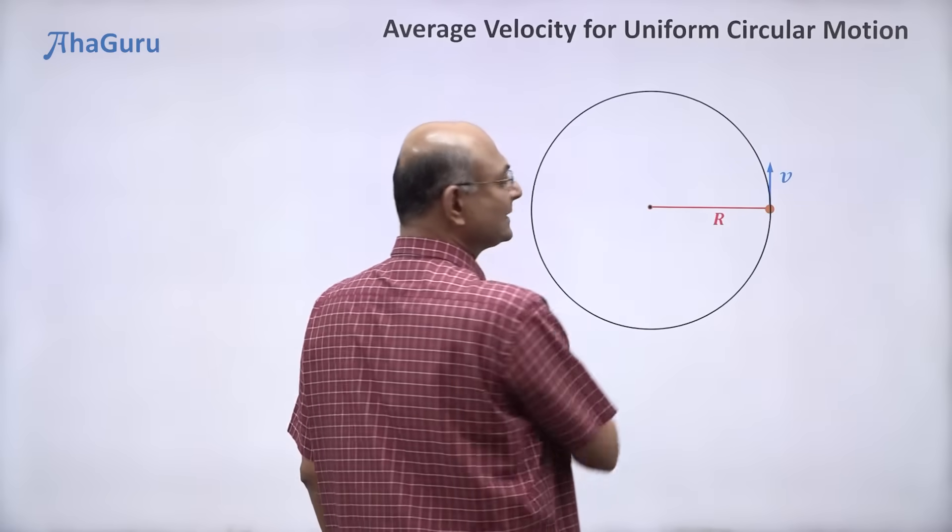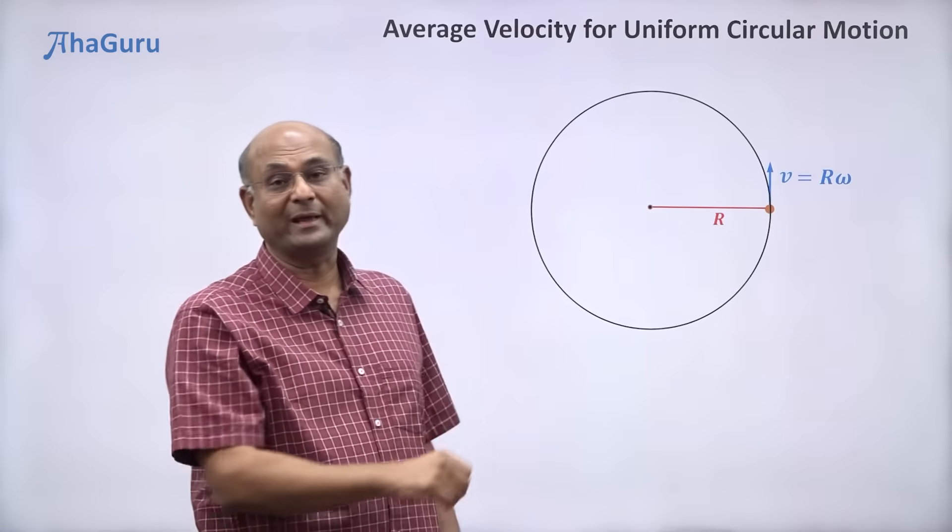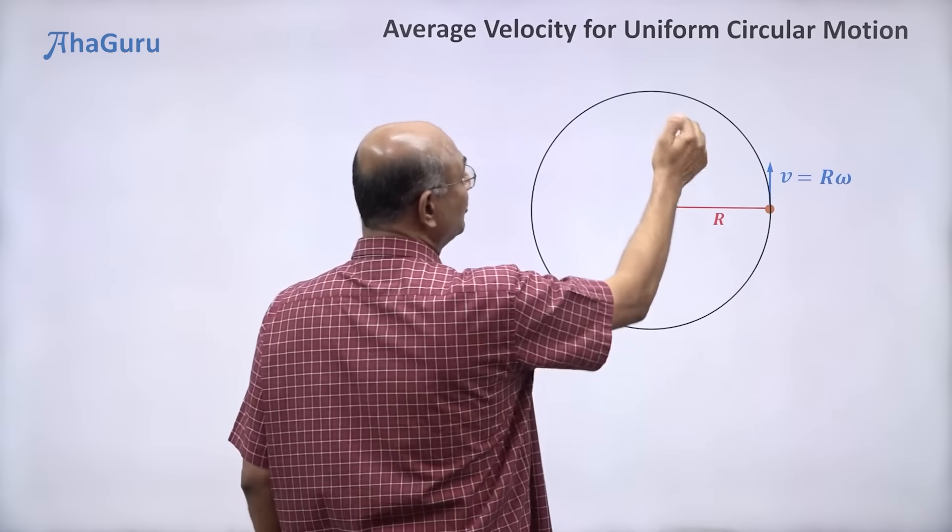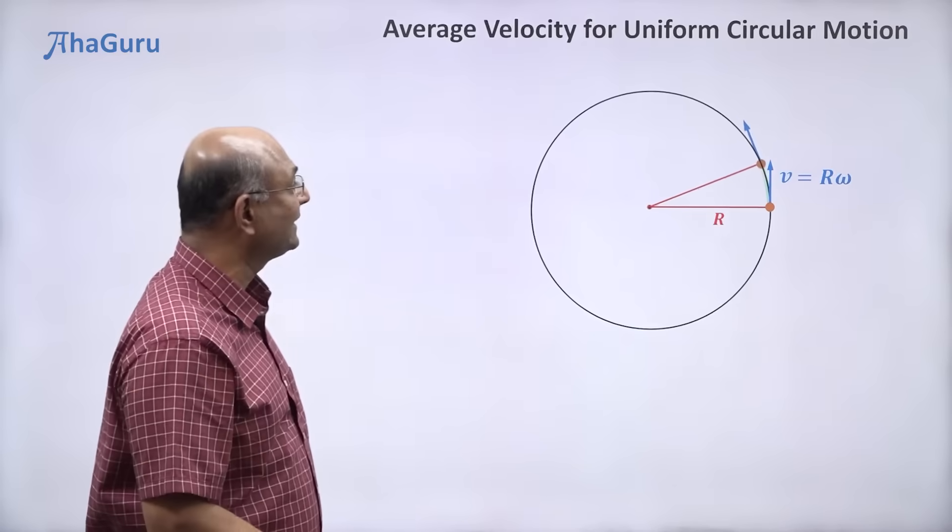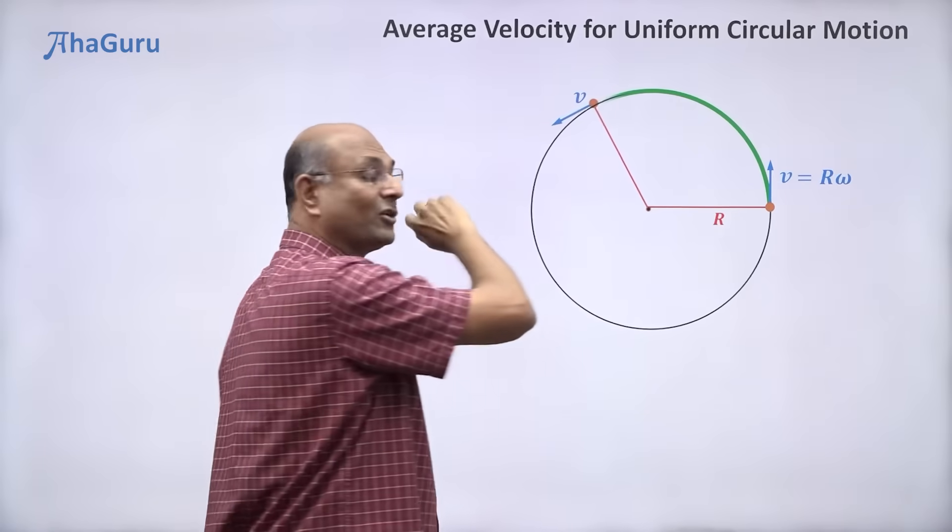So what will be the linear speed? Radius is r, so you can say it is r omega. But as the particle moves, the direction of the velocity will keep changing. So you can see the velocity vector changes. The speed remains constant.